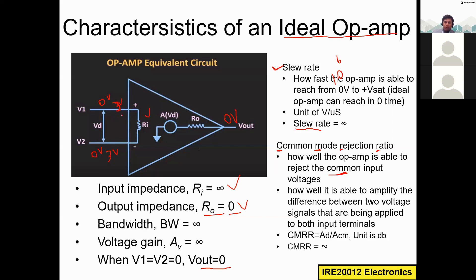According to the formula, Vo equals Vd times A, where Vd is the difference between v1 and v2. If v1 and v2 are both three volts, then v1 minus v2 equals zero, and multiplied by A the output is zero. This demonstrates how the op-amp rejects common input voltages — the output is zero volts for equal inputs.